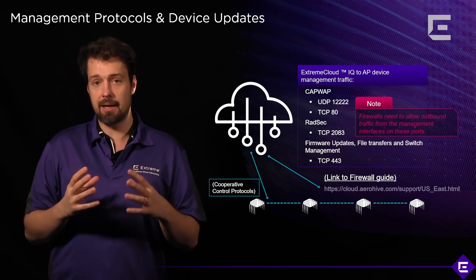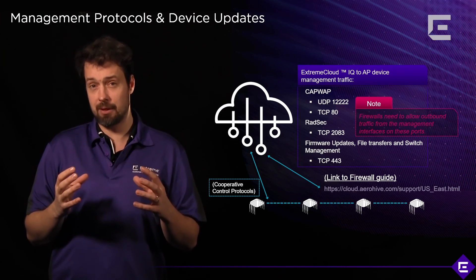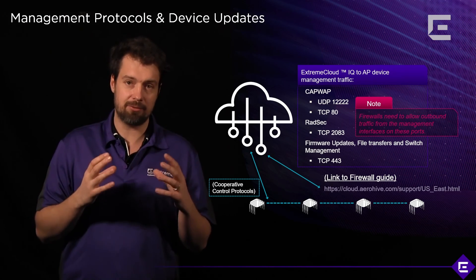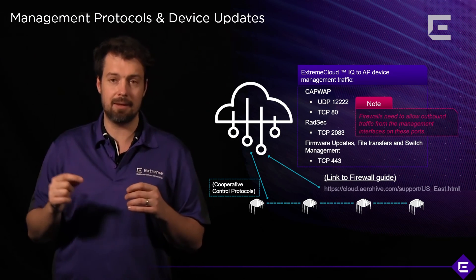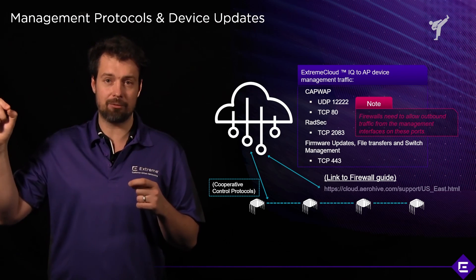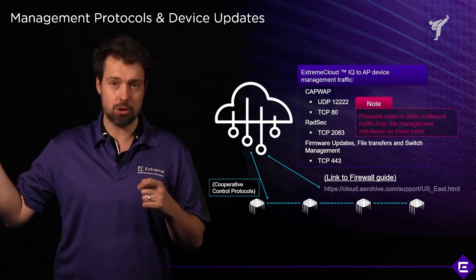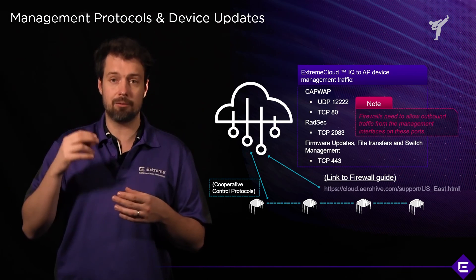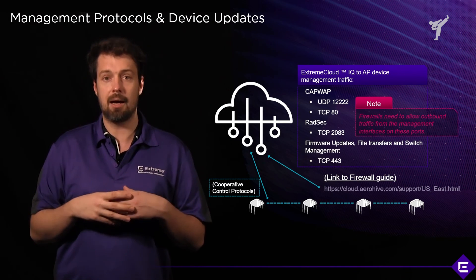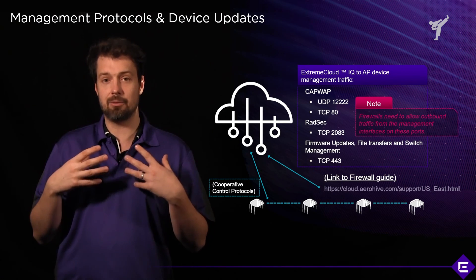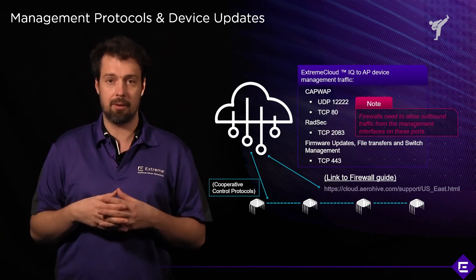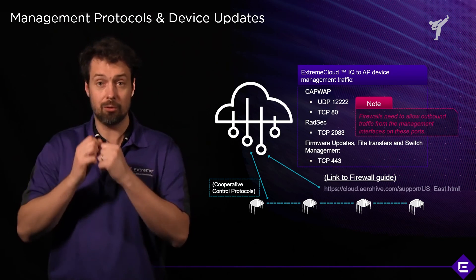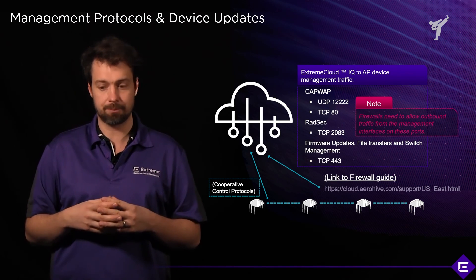If you need to find out the IP addresses of your RDC, those can be found on the Extreme Cloud IQ platform about page. Within the product, you'll be able to find the fully qualified domain names that you need to open up on your firewall for communication to your specific RDC instance.